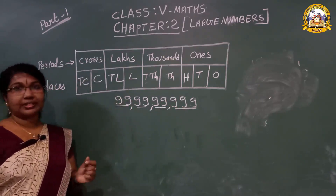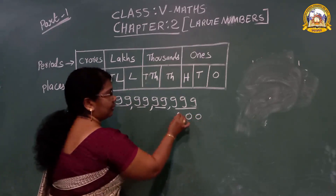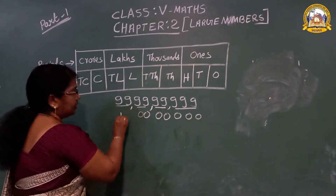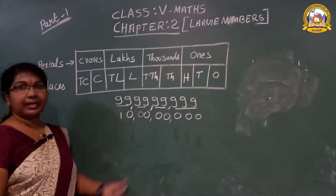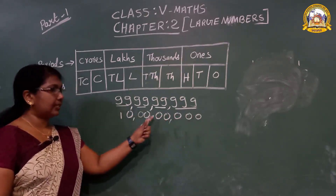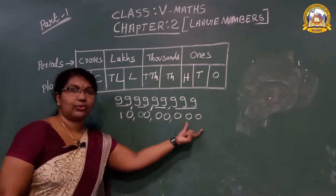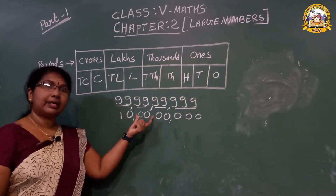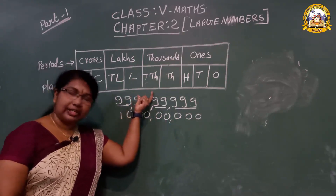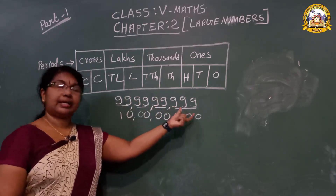Can you say which is the smallest 9-digit number? Here you have to write. This is the smallest 9-digit number. Read it: 1s, 10s, 100, 1000, 10,000, lakh, 10 lakh, crore, 10 crore. Which is the smallest 9-digit number? 10 crore. Which is the largest 9-digit number? 99 crore 99 lakh 99,999.